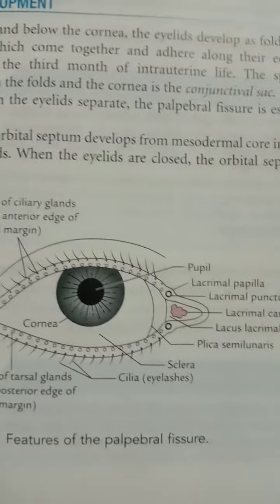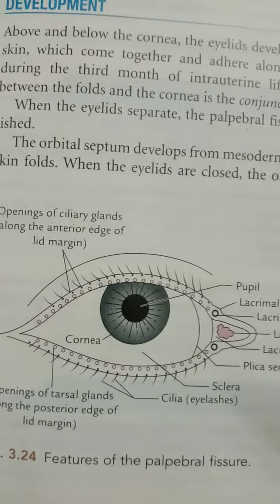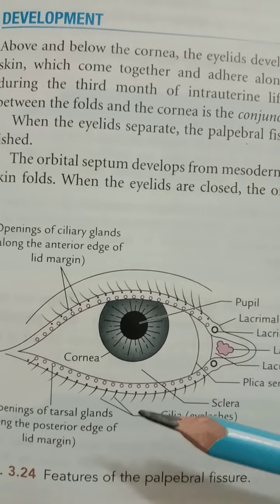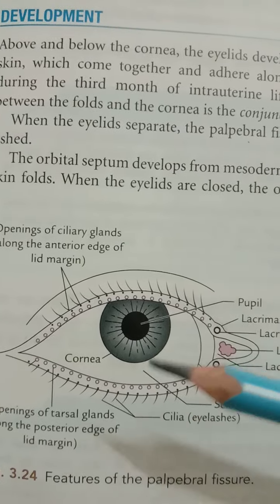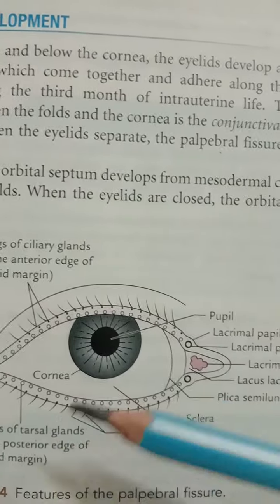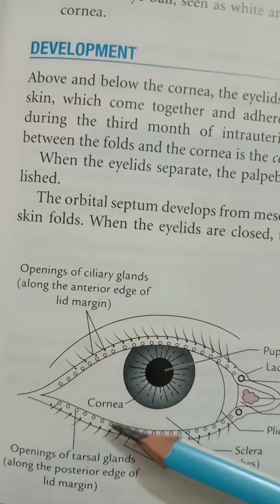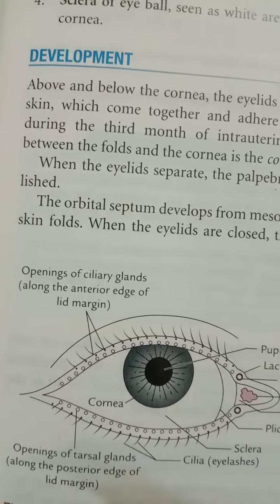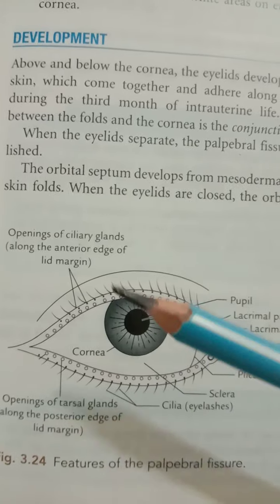The blood supply of the eyelid comes from the superior and inferior palpebral branches of the ophthalmic artery and the lacrimal artery. The nerve supply: the upper eyelid and bulbar conjunctiva are supplied by the supratrochlear and supraorbital nerves, and the lower eyelid by the infraorbital nerve. The medial half drains into the submandibular lymph nodes and the lateral half into the preauricular lymph nodes. The veins drain into the ophthalmic and facial veins.